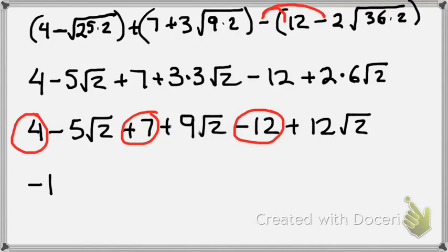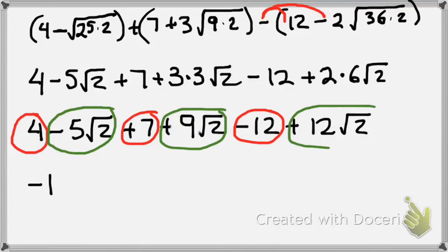Okay, so now let's do our root 2's. I have negative 5 root 2, positive 9 root 2, and positive 12 root 2.